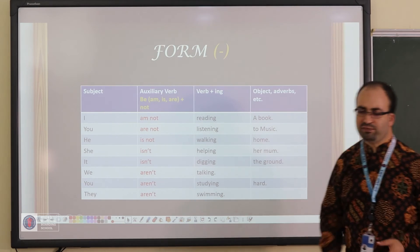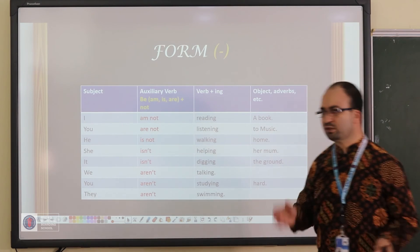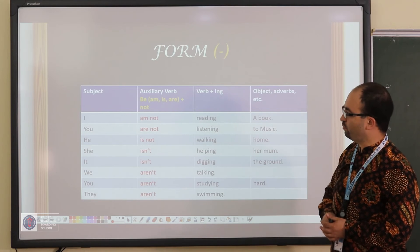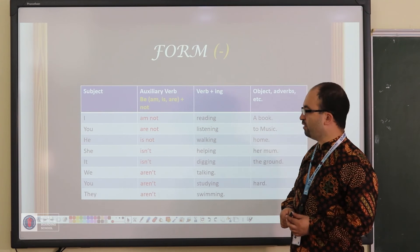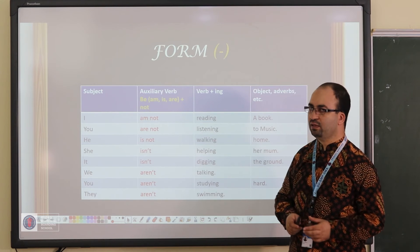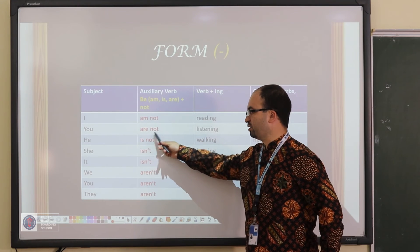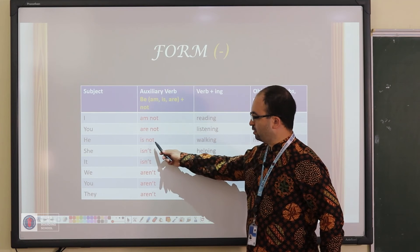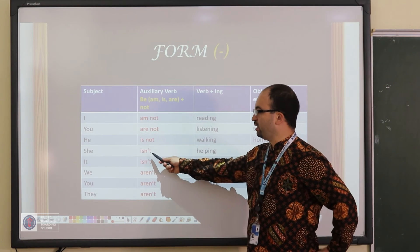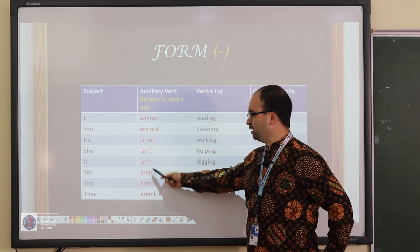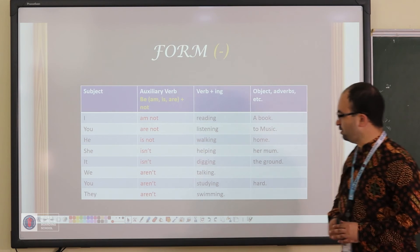When we come to negative statements, the structure is almost the same, except we put 'not' after the auxiliary verb. We can put 'not' in two ways — either separately, like 'am not,' 'are not,' 'is not,' or we can join it as contractions like 'isn't' or 'aren't.' The rest of the sentence remains the same.